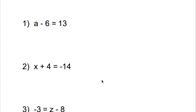The first one: a minus 6 equals 13. We always want to isolate the variable — in this case, we want to get a all by itself. In order to do that, we're going to have to do the opposite of minus 6. The opposite of minus 6 is plus 6, and whatever we do on one side, we have to do on the other as well.